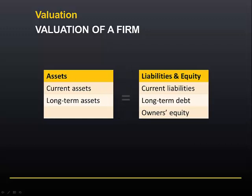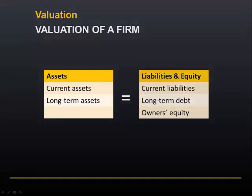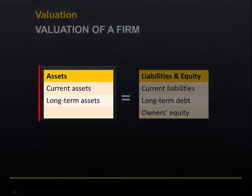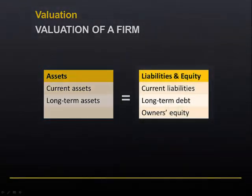In theory, we could determine the value of the firm by adding up the value of all the assets on the left-hand side of the balance sheet, or we could instead value the firm by adding up the value of debt and equity securities that make up the right-hand side of the balance sheet.